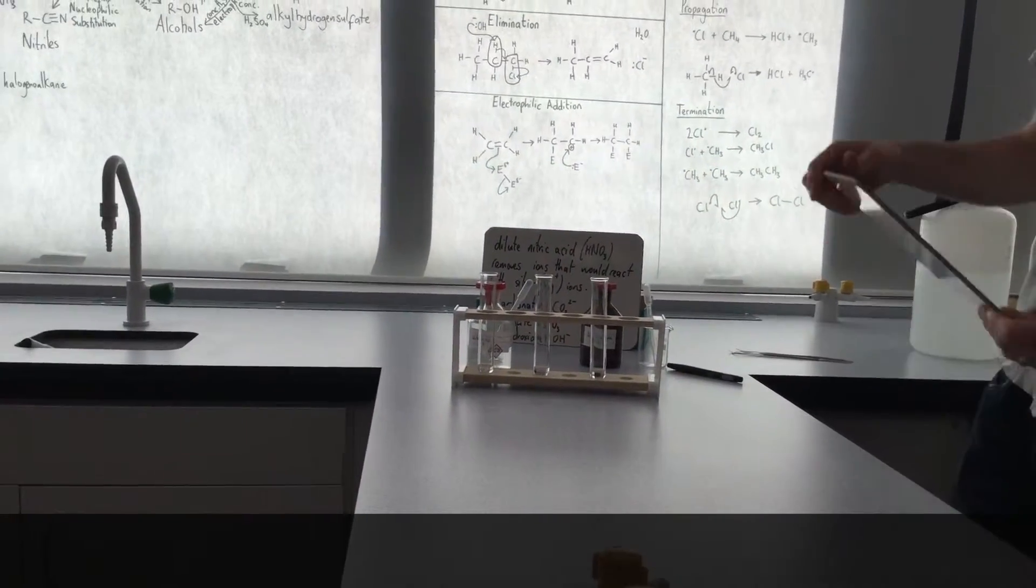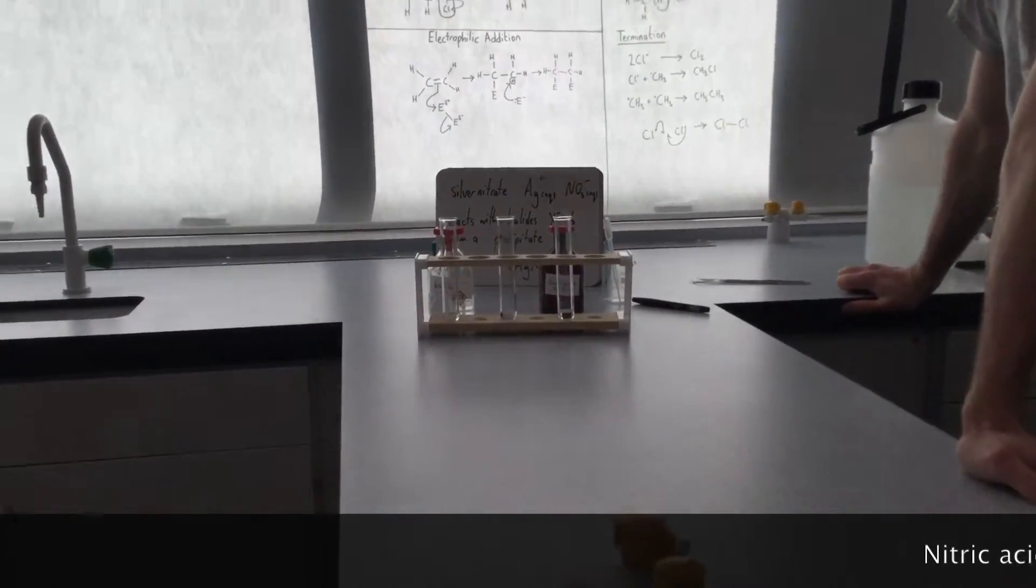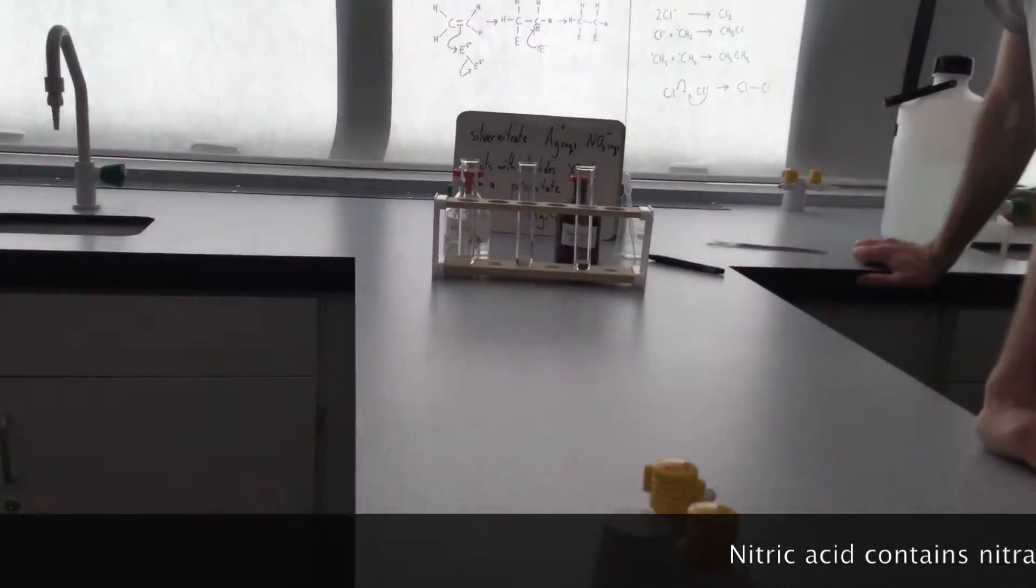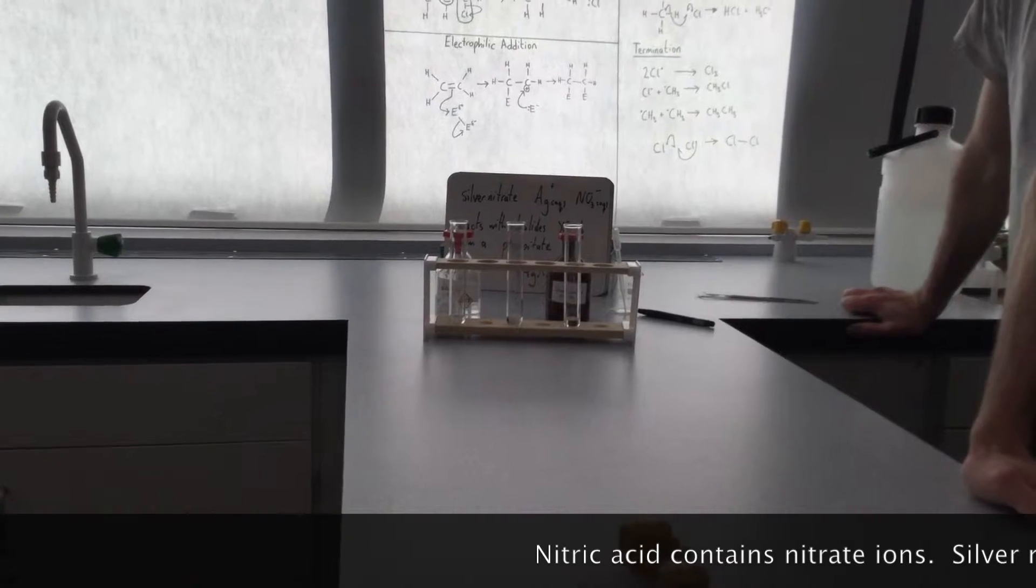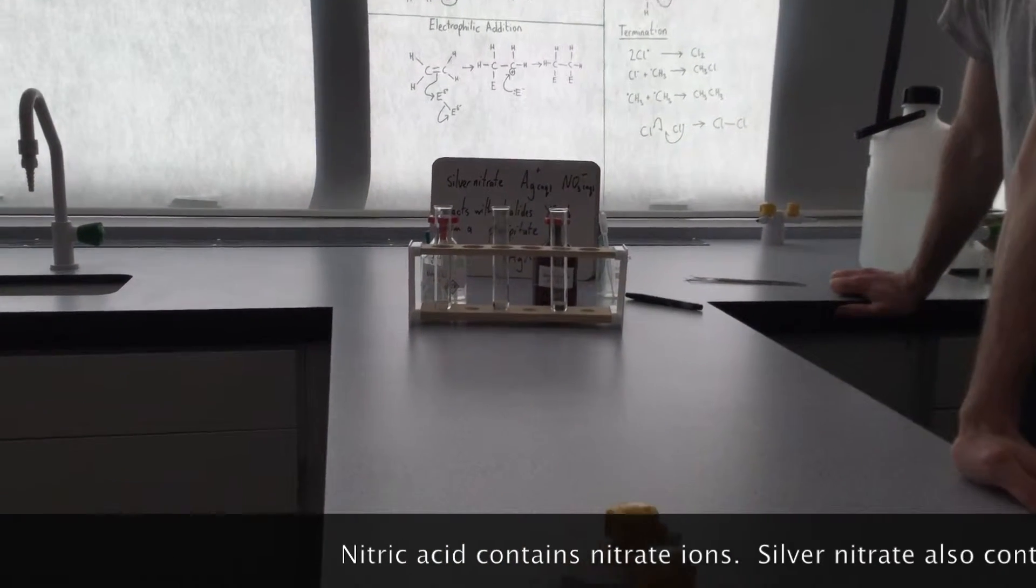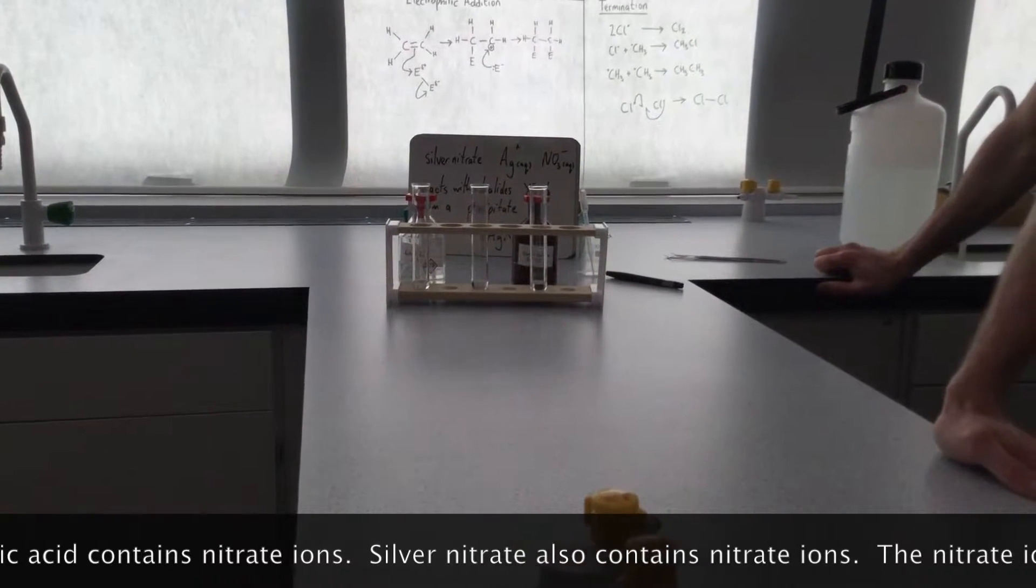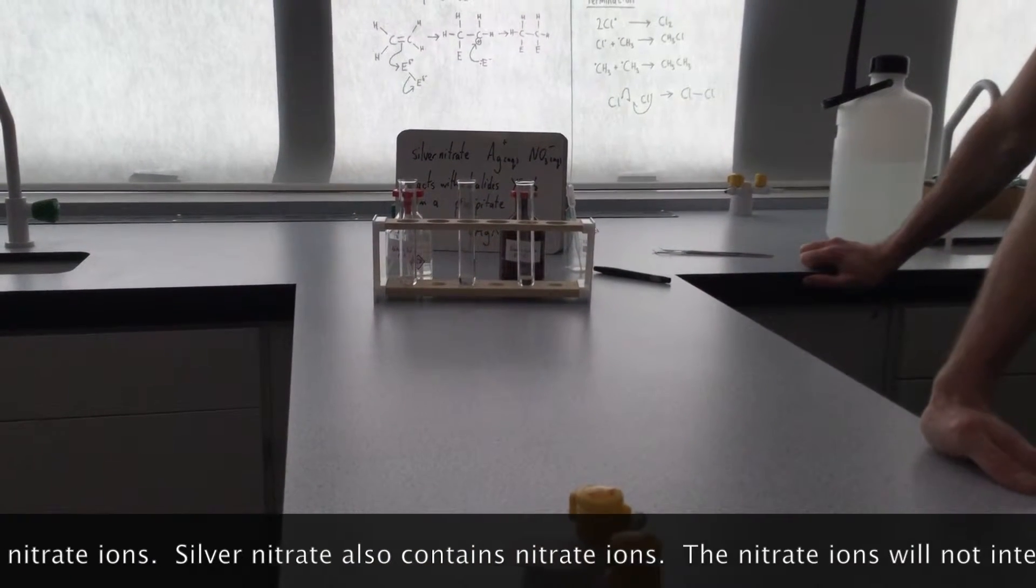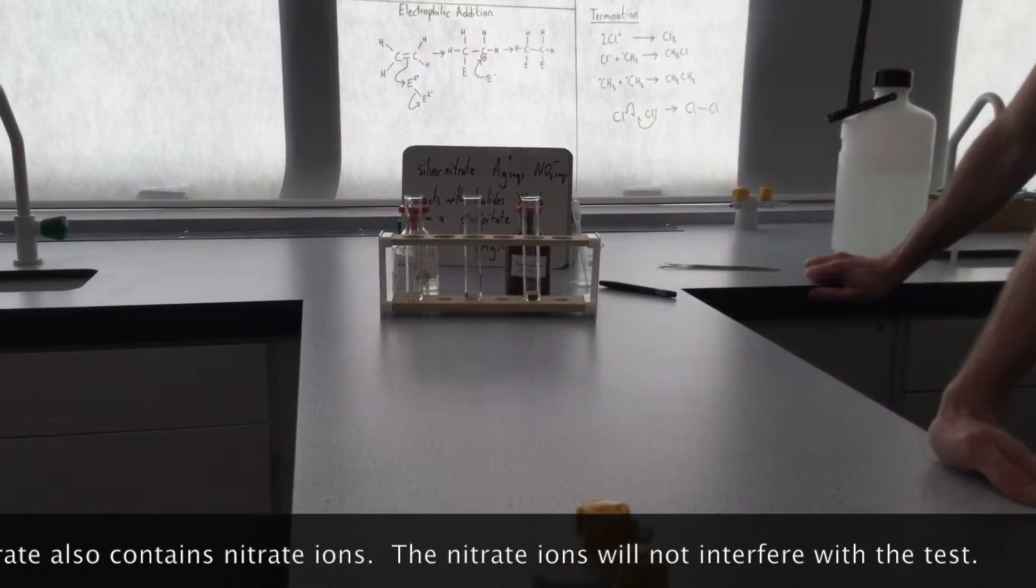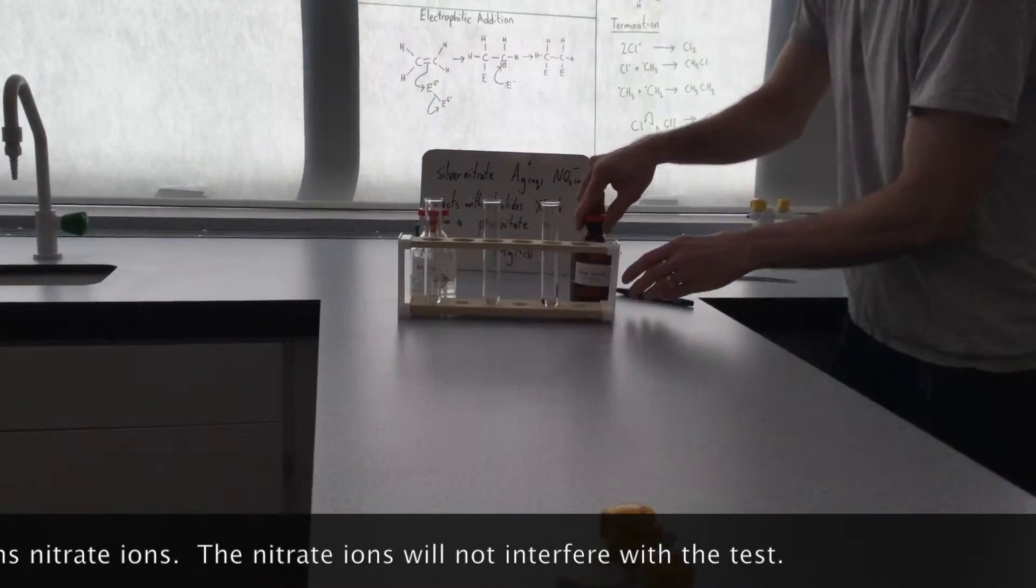The second thing that we're going to do is we're going to add some silver nitrate solution. Okay, so silver nitrate contains silver ions and nitrate ions. So the reason we chose nitric acid is because nitric acid also contains nitrate ions. So it's not going to interfere with the test. And what the silver ions does in solution is that it reacts with the halides to form a precipitate, which is a solid. So we should see that happening.